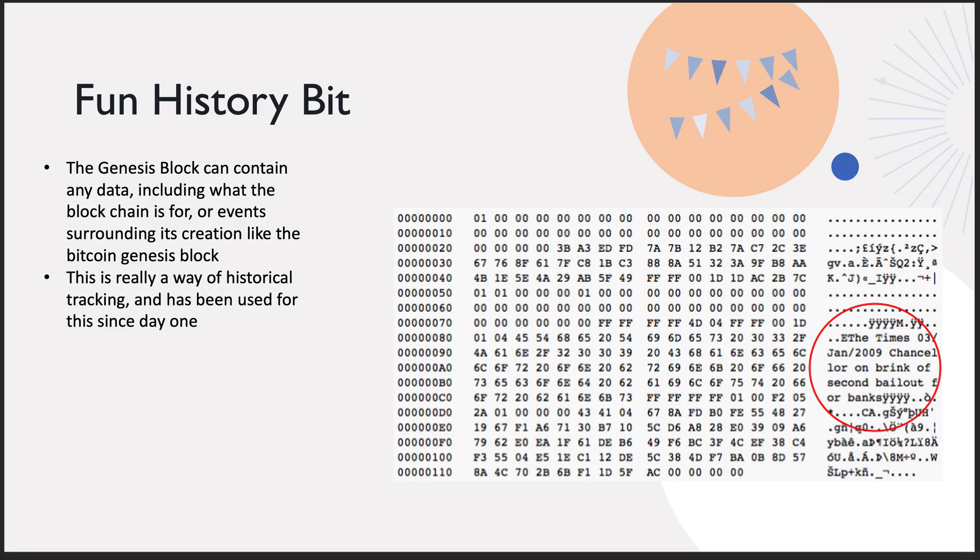There's some fun history here. This is a famous copy of the initial Bitcoin Genesis block. They actually embedded a headline in there from January 3rd, 2009: 'Chancellor on the brink of second bailout' — because back in 2008, all the banks failed. That bit about the Genesis block is that it can contain any data, including what the blockchain is for.